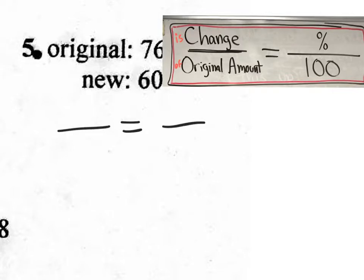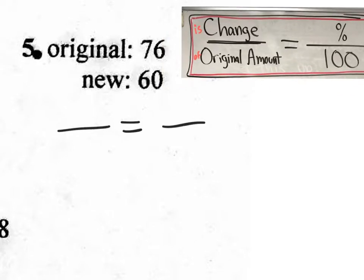We have the equal sign, a fraction equal to another fraction. Could somebody tell me what the change is? 16. So what kind of change is it? Increase or decrease? So it's 16, the change. It is a decrease. So at the end, I'll put decrease. Do I know my original amount that belongs on the bottom left? 76. Do I have a percent? No, I don't. So what am I going to put right there? X. Thank you. And I do know that it's always over 100. So let's cross-multiply.